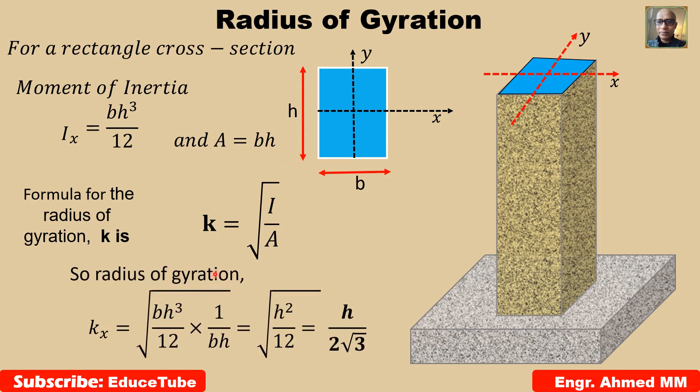Now, to find the radius of gyrations, these divided by these. So, with simplification, we get it as h divided by 2 square root of 3. So, to find radius of gyration, we can use this formula or equation. Let's move to the next slide, how to use this.